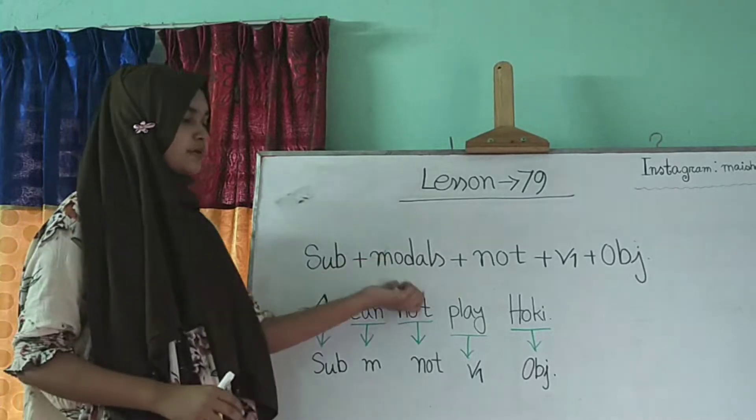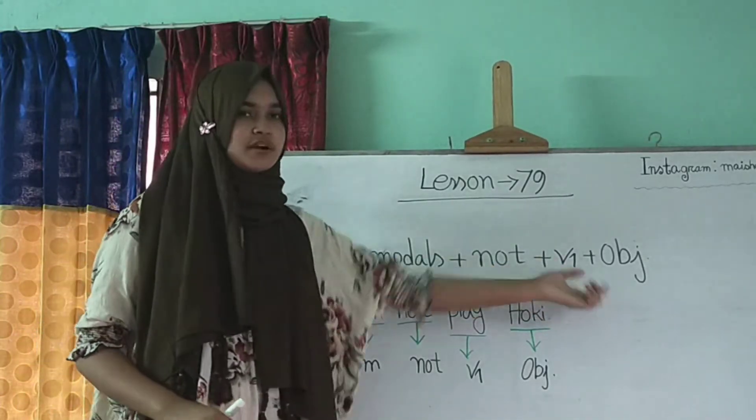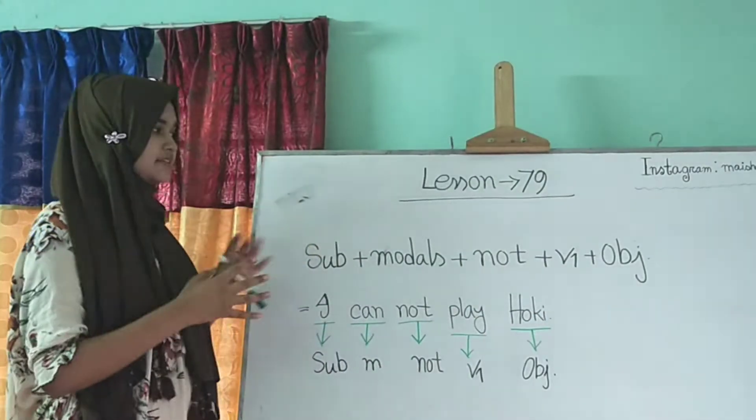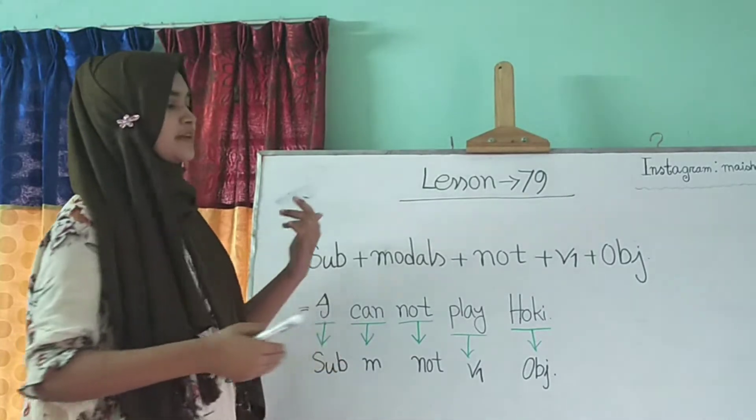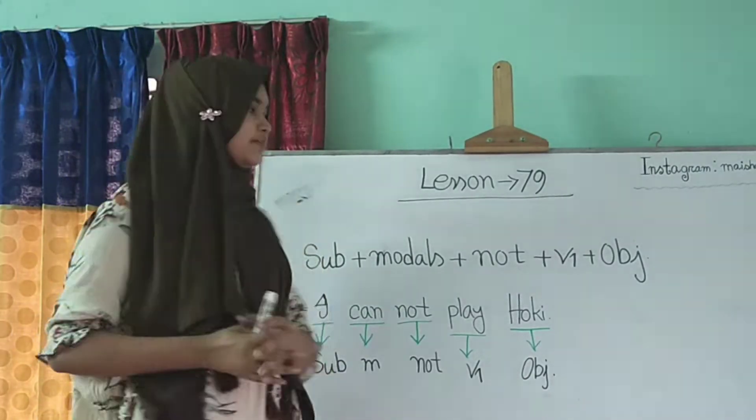So our first one is subject plus models plus not plus verb one plus object. So that is our structure, subject plus models plus not plus verb one plus object.